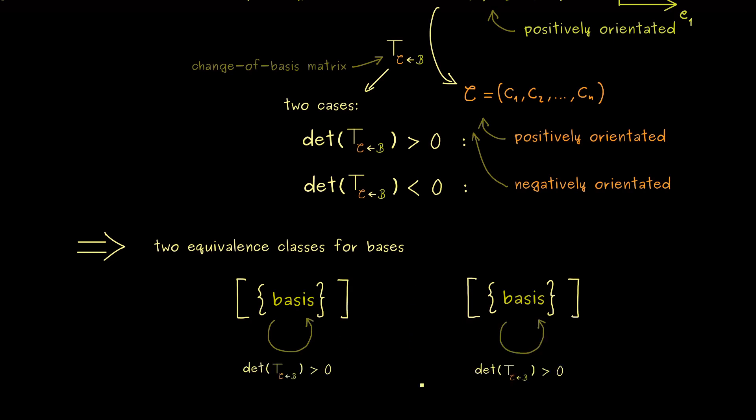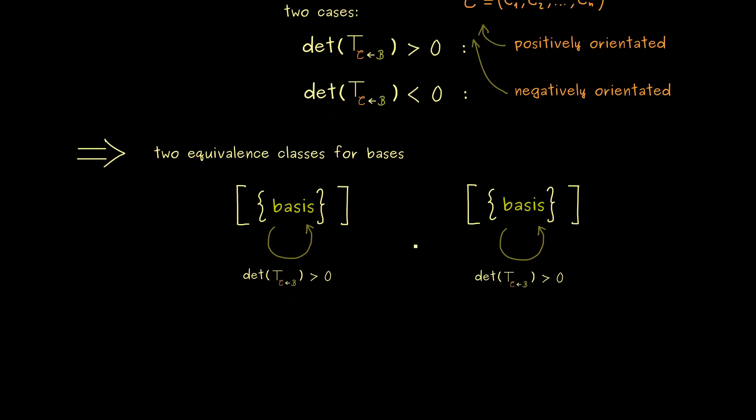So this defines a nice equivalence relation. And it's easy to see that we get two equivalence classes.